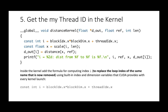We work now in the kernel function. At this point, we want to associate one grid point to each thread. To calculate the thread ID number, we use the block ID (blockIdx.x), multiply by the number of threads per block (blockDim.x), and add the thread ID within the block (threadIdx.x).